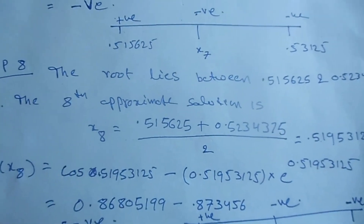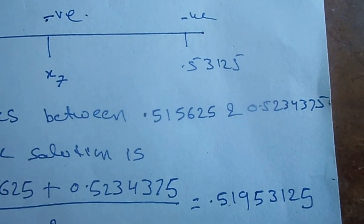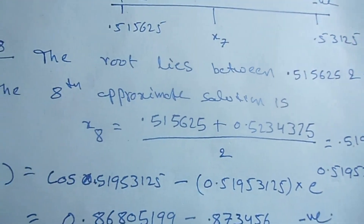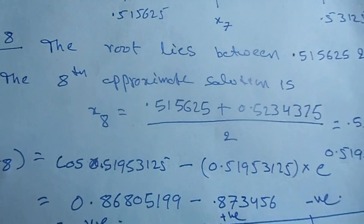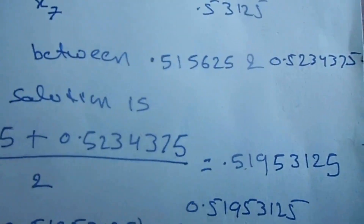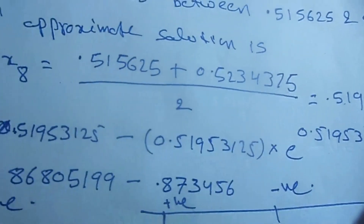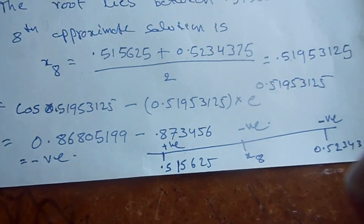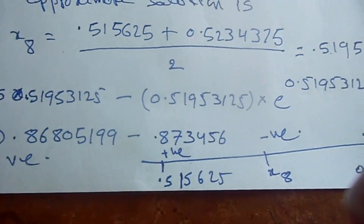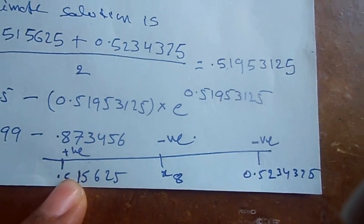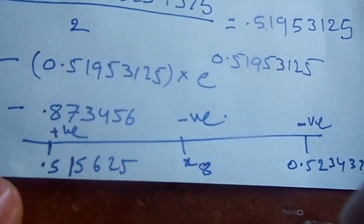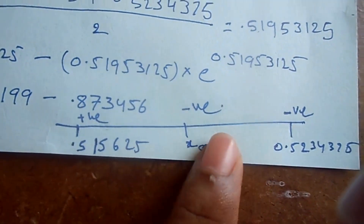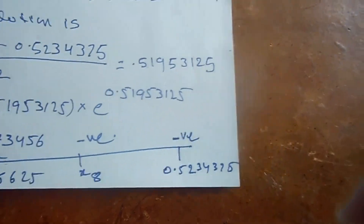Step 8: the root lies between 0.515625 and 0.5234375. The eighth approximate solution is x8 = (0.515625 + 0.5234375) / 2 = 0.51953125. f(x8) = cos(x8) minus x8·e^x8, which is a negative value. At x=0.515625 it is positive, and at x8 it is negative. The root lies between 0.515625 and x8.